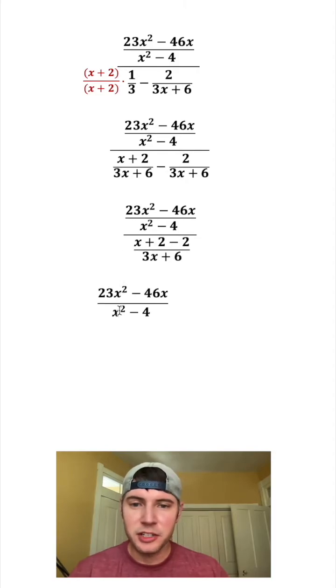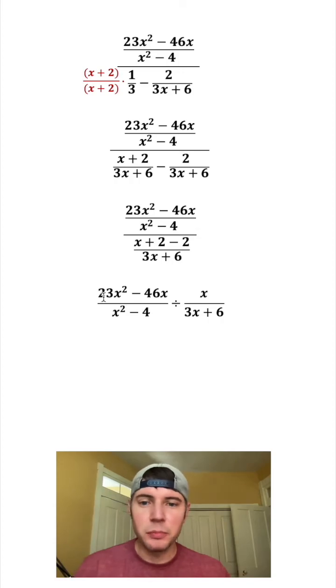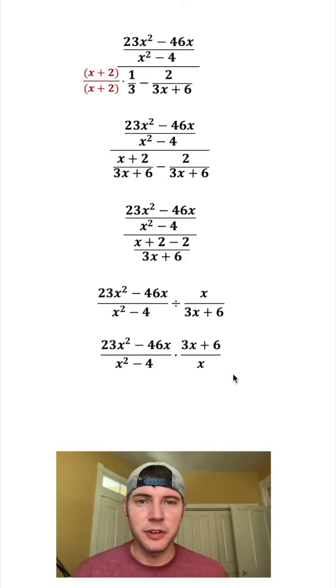We can rewrite this fraction that's on top, think of this as divided by, and then we're dividing by this bottom fraction. Very quickly, x plus 2 minus 2 can just change into x. Anytime you divide fractions, one process you can do is bring down the first fraction, change the divide to multiply, and flip the second fraction. A lot of people think of this as keep change flip.